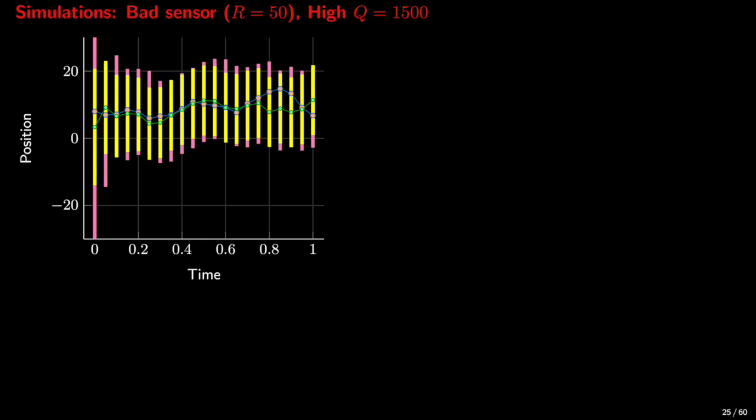And lastly, this is what happens if we have a bad sensor and a highly uncertain system. So both r and q are large.